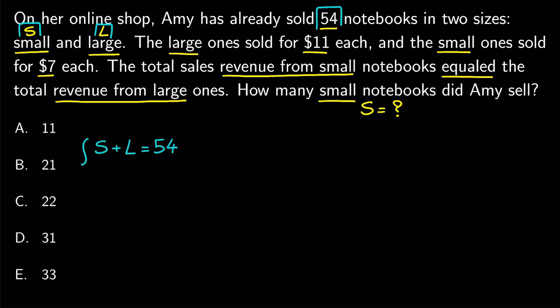Since we have got two variables, we need a second equation to solve for S. We know that the revenue from small notebooks equal the revenue from large ones. The large ones sold for $11 each and the small ones sold for $7 each. So we have 11L equals 7S.